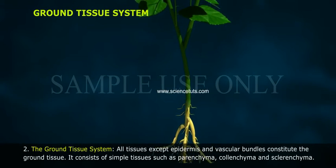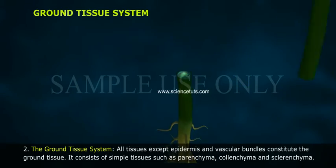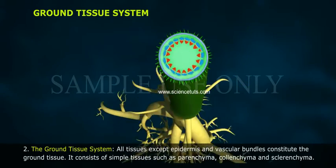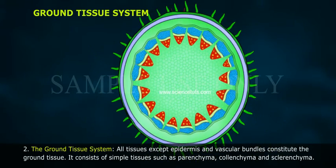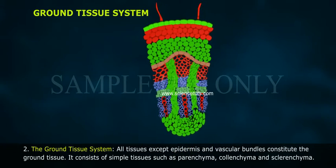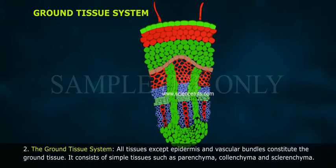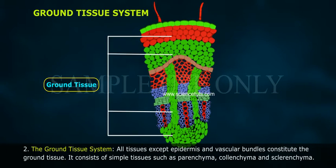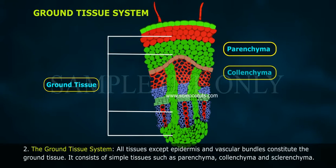The Ground Tissue System: All tissues, except epidermis and vascular bundles, constitute the ground tissue. It consists of simple tissues such as parenchyma, collenchyma, and sclerenchyma.